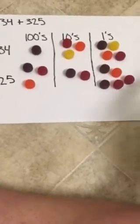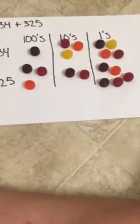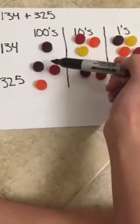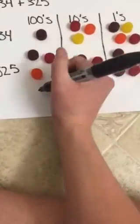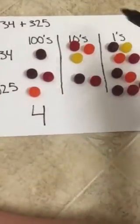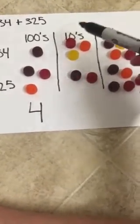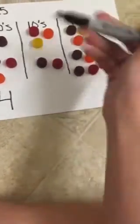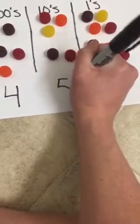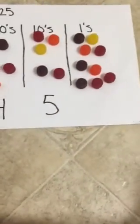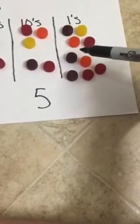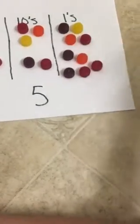So then next we just want to add all of these together. So we'll look at the 100s first and we'll see that there's 1, 2, 3, 4. And then next we look at the 10s place and we see that there's 1, 2, 3, 4, 5. And then we see in the 1s place that we have 1, 2, 3, 4, 5, 6, 7, 8, 9.